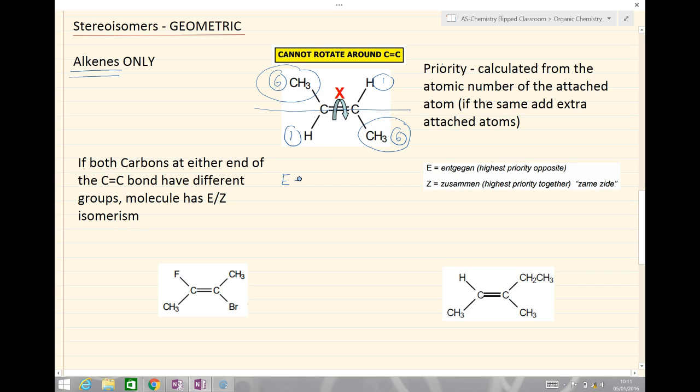And importantly, this would be one, two, three, four. So, this would be E but-2-ene, if I was to number it.